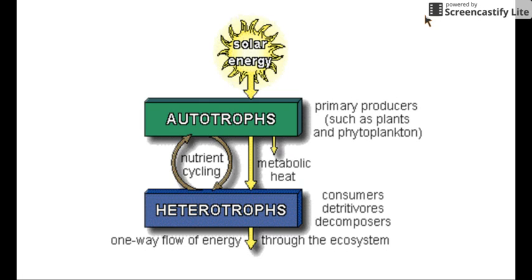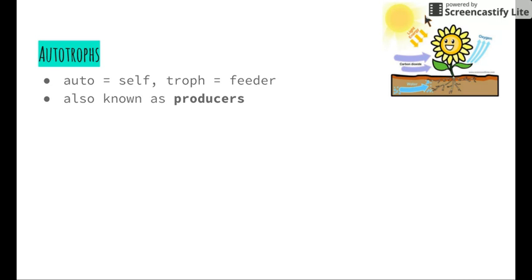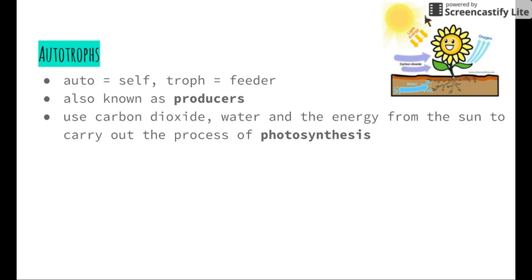We have a constant cycle of energy as well as a constant cycle of nutrients. Looking at autotrophs more closely: when we break down the word 'autotroph,' 'auto' simply means self and 'troph' means feeding. So autotrophs are organisms able to provide food for themselves. A term we've used this year is 'producers' — autotrophs are producers because they're able to produce their own food.